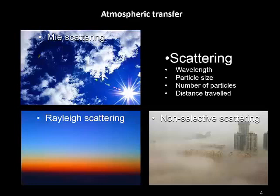Scattering is a process where incident radiation passing through the atmosphere hits particles and is scattered into a whole range of different pathways. It's a phenomenon we witness in our daily lives. For example, we see white clouds as white because visible light radiation is interacting with water molecules in the atmosphere that are approximately the same size as the wavelength of visible light, resulting in the whole visible spectrum being scattered equally, and as a result we see clouds as white.